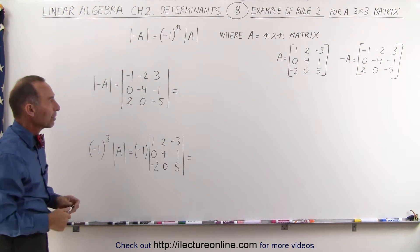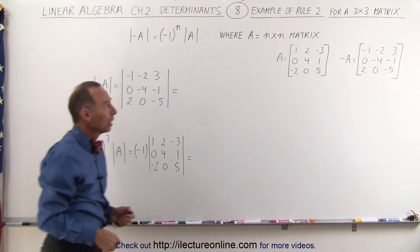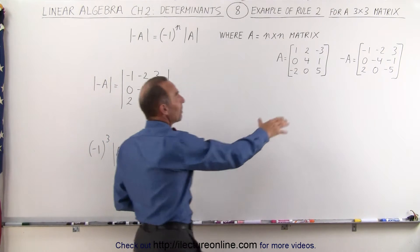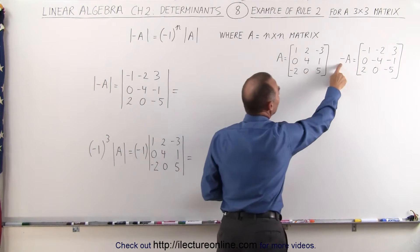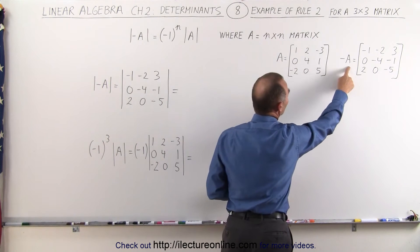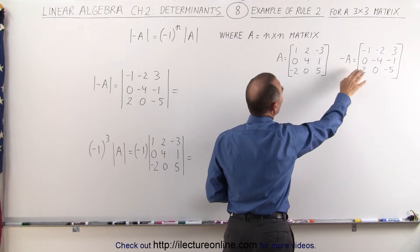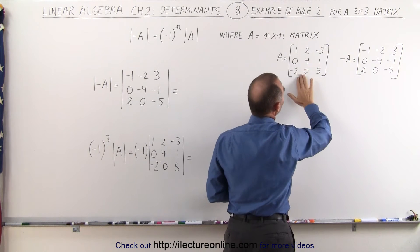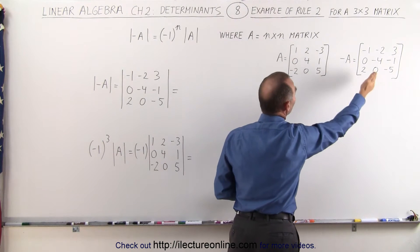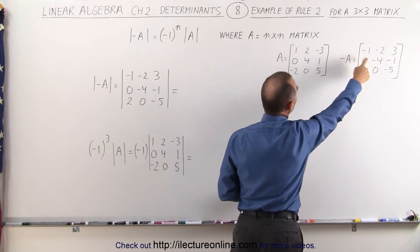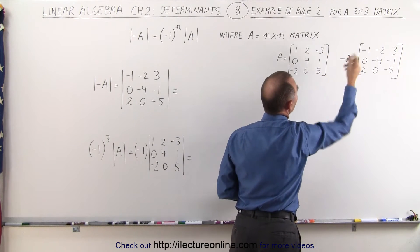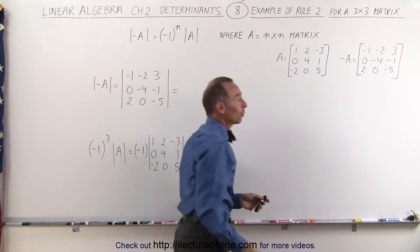If this is matrix A, then this would be the negative of matrix A — simply changing all of the elements to the opposite sign. The positives become negatives and the negatives become positives.